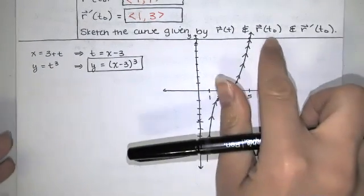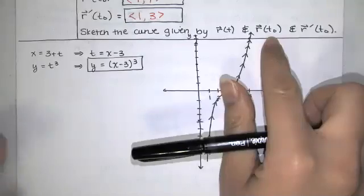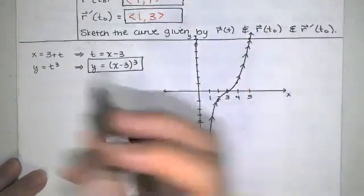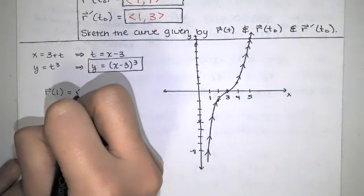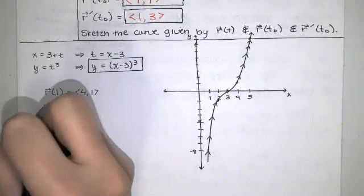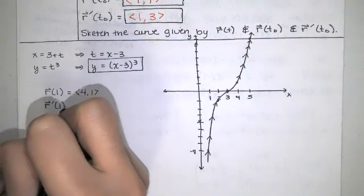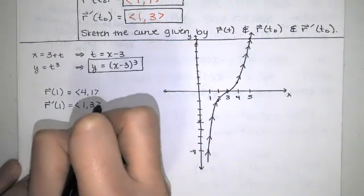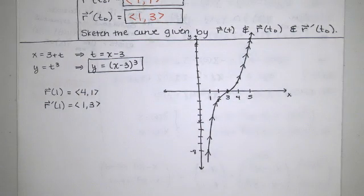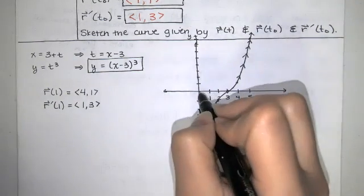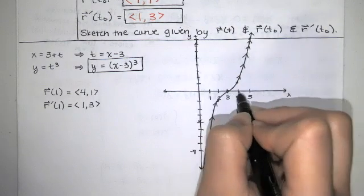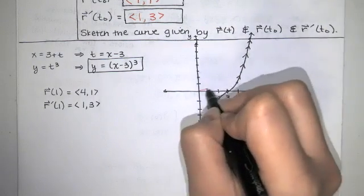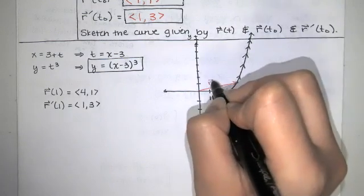Okay. So that's our path. And we're also asked to sketch r of t naught. And in this case, t naught is 1. So we have r of 1 equals 4, 1. And we want to sketch r prime of 1 equals 1, 3. Now the way r of 1 is typically drawn is from the origin. So we say, when t is equal to 1, we go 4 units in the x direction, 1 unit in the y direction. And that is r of 1.